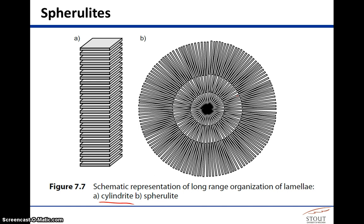As a spherulite grows out from a central location, you get all these stacked regions in a spiraling outward or bullseye pattern as shown. Under a microscope, you can verify the existence of these crystalline domains to optically characterize your material as either semi-crystalline or amorphous.